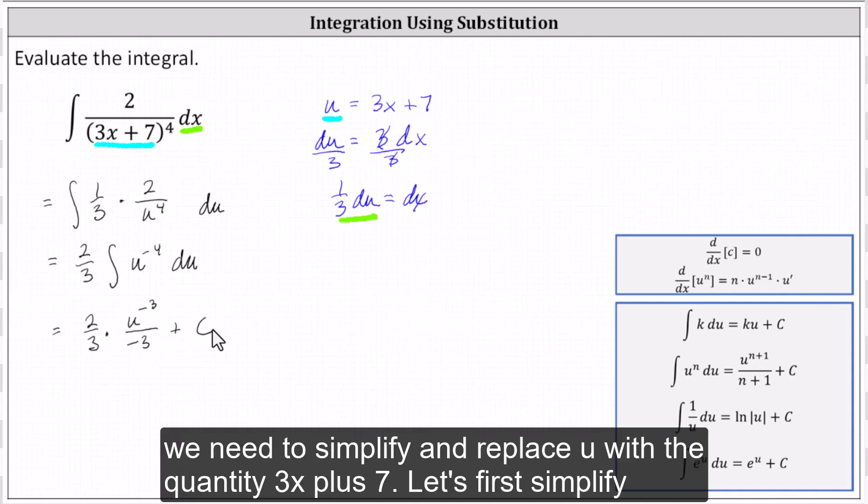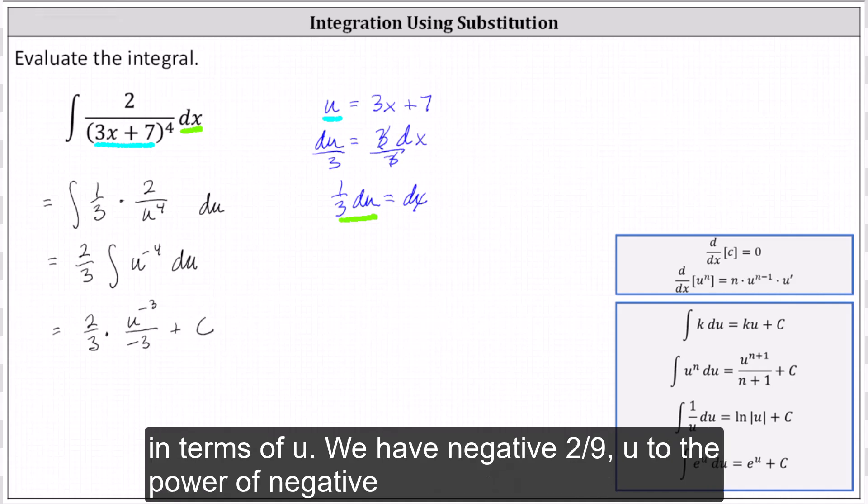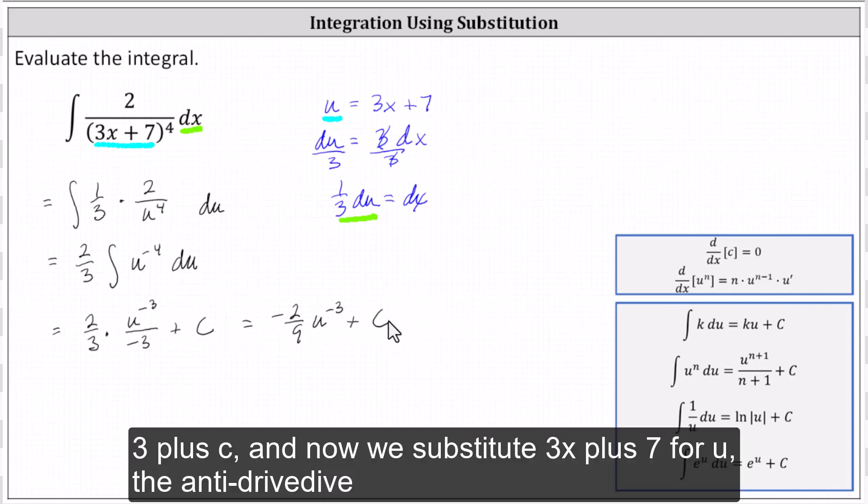Now we need to simplify and replace u with the quantity 3x plus 7. Let's first simplify in terms of u. We have negative 2/9 u to the power of negative 3 plus c. And now we substitute 3x plus 7 for u.